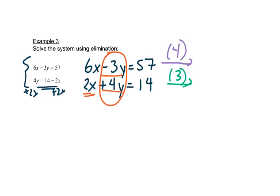So remember that you have to multiply the whole equation by that number. So we'd have 6 times 4 is 24x. 4 times 3 would be minus 12y. And then 57 times 4 is 228. It's okay to have big numbers in the middle of these problems. It's pretty common.